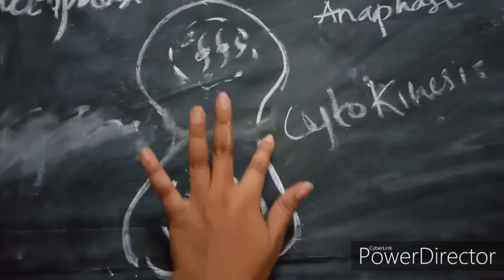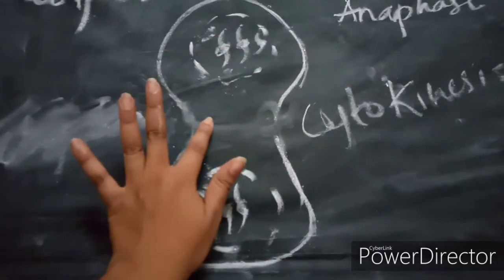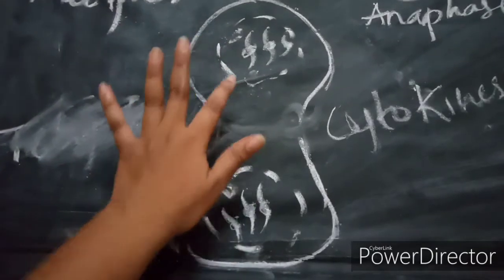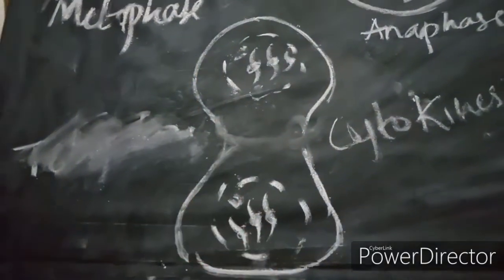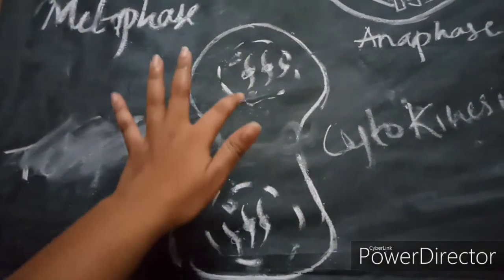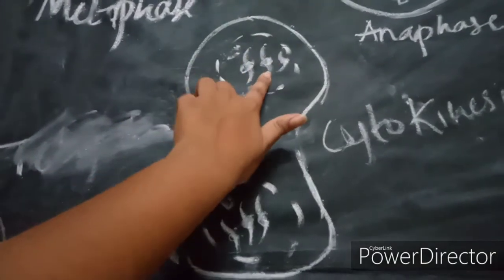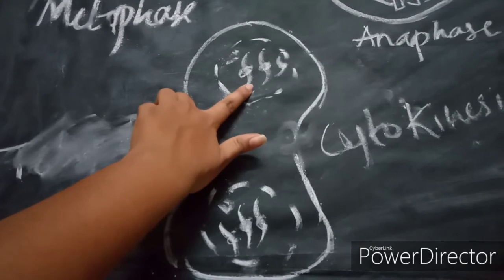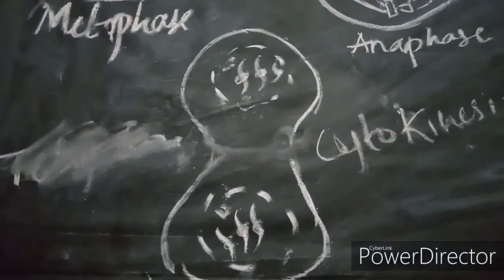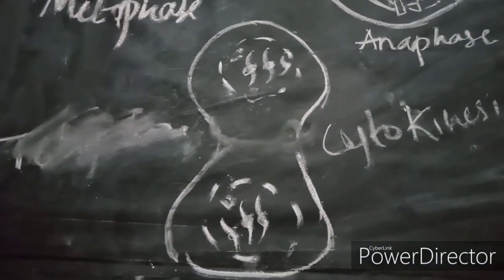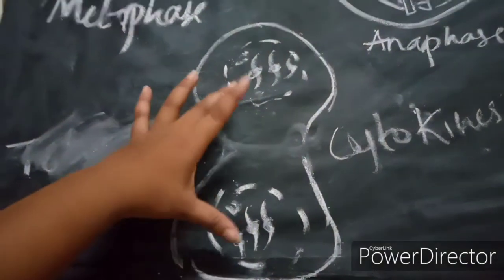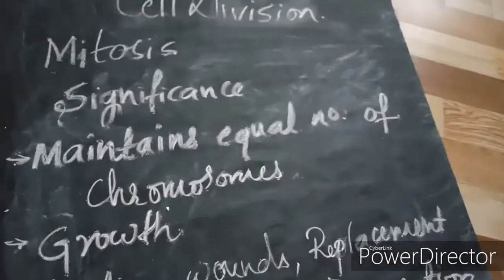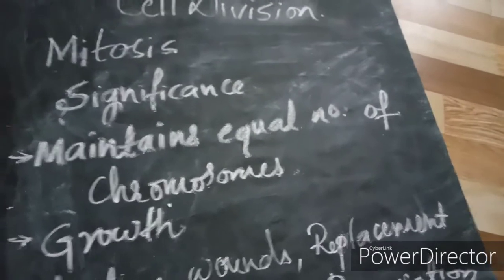Next is cytokinesis. In cytokinesis, the furrow deepens and there is formation of two daughter cells, each having the same number of chromosomes as the parent cell. Mitosis is thus completed with the formation of two daughter cells.